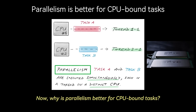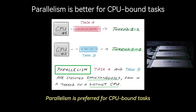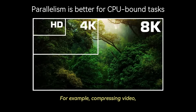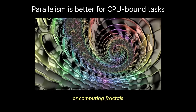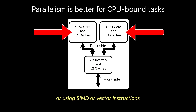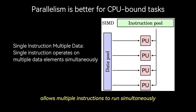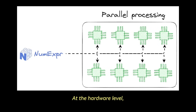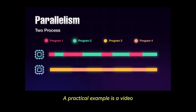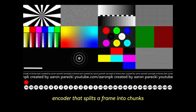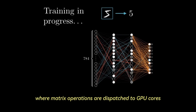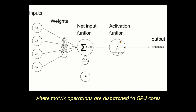Why is parallelism better for CPU-bound tasks? Parallelism is preferred for CPU-bound tasks where performance is limited by the computation itself rather than waiting for I/O — for example, compressing video, training deep learning models, or computing fractals, which involve large amounts of math that can be parallelized. Dividing the work across CPU cores, or using SIMD or vector instructions, allows multiple instructions to run simultaneously. At the hardware level, this is implemented with multi-core processors, vector execution units, and GPU cores. A practical example is a video encoder splitting frames into chunks processed in parallel, or a neural network training pipeline dispatching matrix operations to GPU cores.